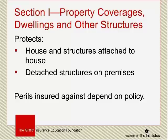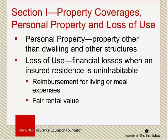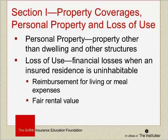The distinction between Coverage A and B is one of attachment. The primary dwelling stands apart from detached structures. If any other structure is physically and permanently attached to the house, it would be considered part of the dwelling itself. We're talking here about the property exposures themselves, not about the perils or causes of loss — those will be discussed later. Coverage C is the personal property coverage. A helpful way to think about it: if you turned your house upside down and shook it, anything that fell out would be considered personal property — clothes, TVs, furniture.